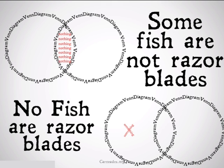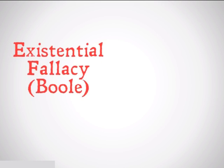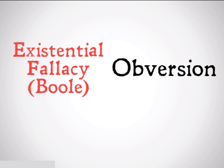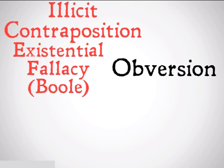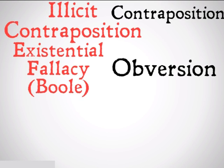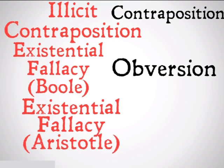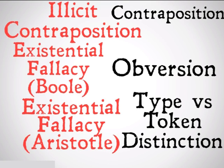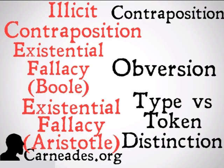The Aristotelian fallacy is going to look a little bit different, and we'll take a look at that in the next video. So that was the existential fallacy for Boole. Also today is aversion, yesterday was illicit contraposition, and tomorrow is contraposition. As I said, it is going to be the existential fallacy for Aristotle and the type-token distinction. Watch a new video every single day for 100 days here at Carneades.org, and stay skeptical, everybody.